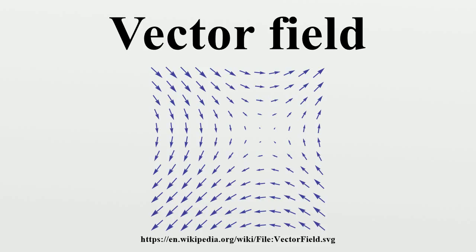Divergence: The divergence of a vector field on Euclidean space is a function. In three dimensions, the divergence is defined by div V = ∇·V, with the obvious generalization to arbitrary dimensions. The divergence at a point represents the degree to which a small volume around the point is a source or a sink for the vector flow, a result which is made precise by the divergence theorem.